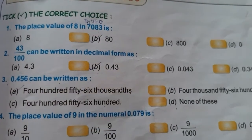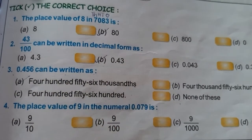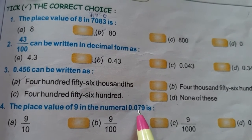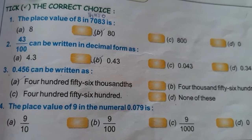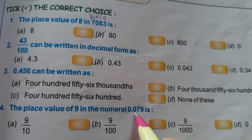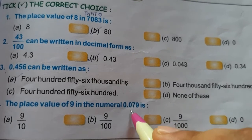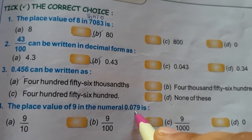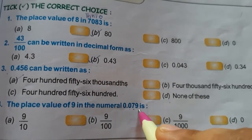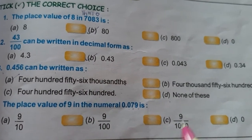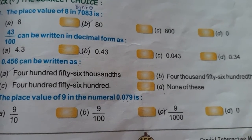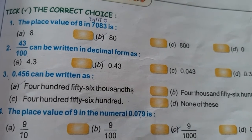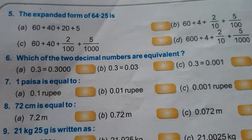Next is the place value of 9 in the numeral 0.079. We know how the positions are there. This is 1 tenths position, this is 100th position, and this is 1 thousandths position. So the answer will be C, 9 by 1000. The place value of 9 in 0.079 will be 9 by 1000.